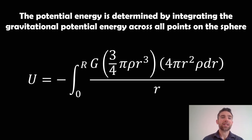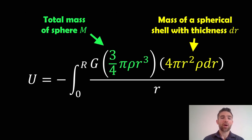The potential energy is determined by integrating the gravitational potential energy across all points of the sphere. We can write the integral like this. We've got two elements: the total mass of the sphere, written in terms of the density and its radius instead.